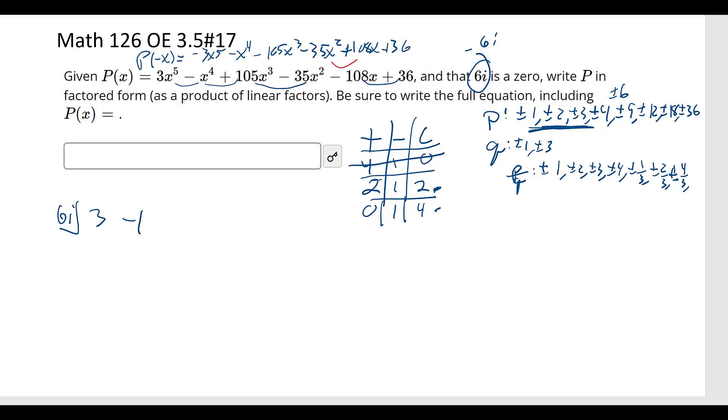So that's going to be 3, negative 1, positive 105, negative 35, negative 108, and positive 36. We'll start with zero there.